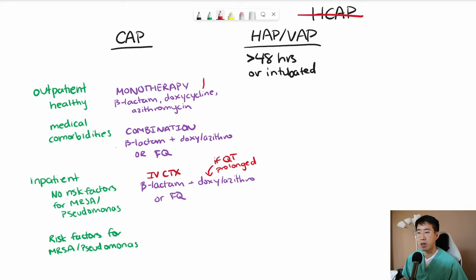One thing I forgot to mention earlier is that actually monotherapy as an outpatient, we're starting to favor doxycycline a little bit more than azithromycin because there's higher rates of macrolide resistance in the community.